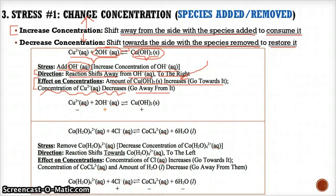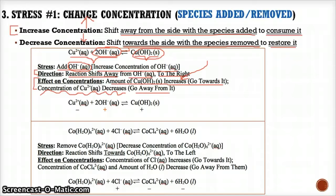For every stress, circle it and decide which direction you're going, then determine the effects on concentration. If you add a species, shift away from it to consume it. That means whichever side you shift towards, the concentration of species on that side increases, whereas the side you're shifting away from, the concentration of species on that side decreases.